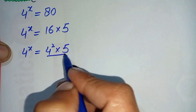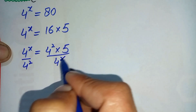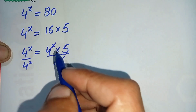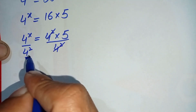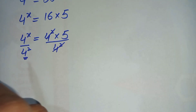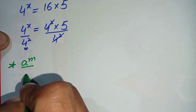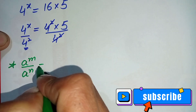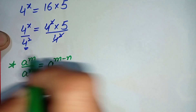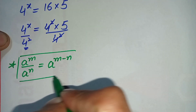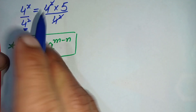Now we will divide both sides by 4 squared. On the right-hand side, the 4 squared terms cancel each other. On the left-hand side, we use the division exponent property: a raised to power m divided by a raised to power n can be written as a raised to power m minus n.